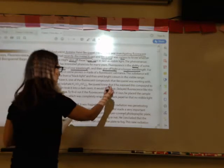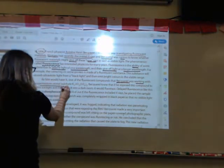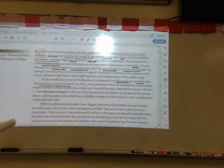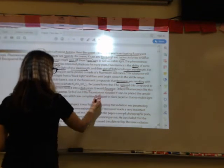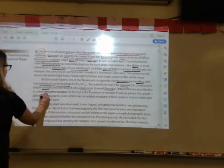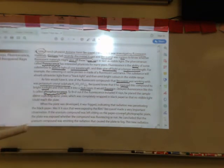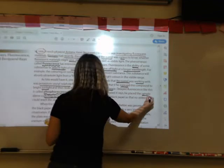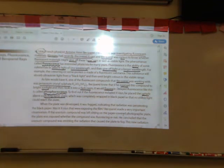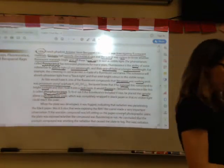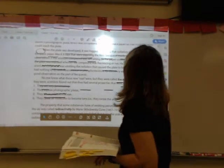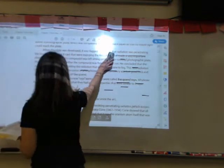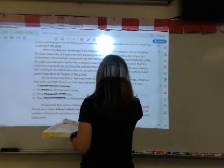Bacquerel was working with potassium uranyl sulfate and he knew that if he exposed this compound to sunlight and then took it into a dark room it would fluoresce. This delayed fluorescence was called phosphorescence. To find out if the fluorescence included x-rays, he put the sample on a photographic plate that was completely wrapped in black paper so that no visible light could reach the plate. When the plate was developed, he noticed that it was fogged and this indicated that radiation was penetrating the black paper. So was it x-rays that were exposing the film?